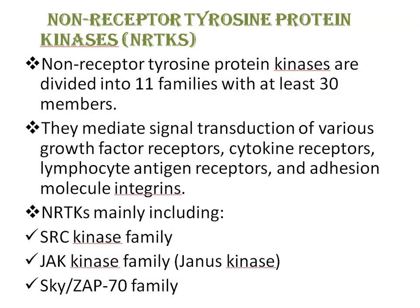NRTKs mainly include the SRC kinase family, JAK kinase family, SYK, and ZAP-70 family. The SRC kinase family, a product of the proto-oncogene c-SRC, is involved in antigen receptors, cytokine receptors, and integrin-mediated transmembrane signaling. The JAK kinase family includes JAK1, JAK2, JAK3, and TYK2, and mainly mediates transmembrane signal transduction of cytokine receptors.